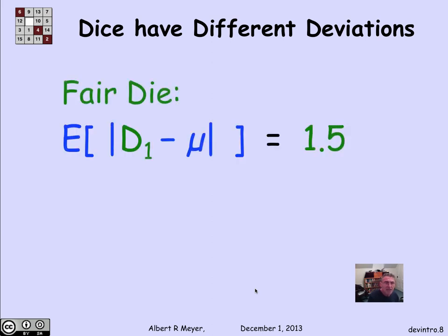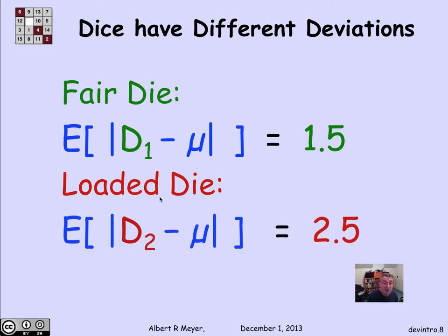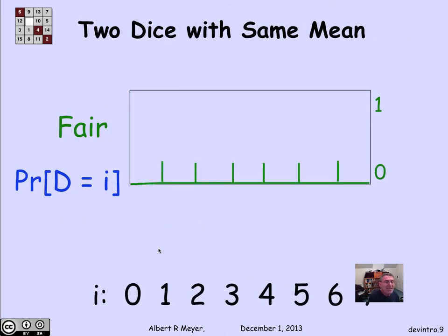So how do I capture the difference? Well, if I look at the expected distance of the fair die to its mean, I claim it's 1 and 1 half. But the expected distance of the loaded die from its mean, same mean, remember, 3 and 1 half is actually 2 and 1 half. In fact, the second die is always exactly 2 and 1 half from its expected value.